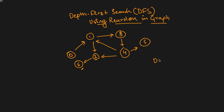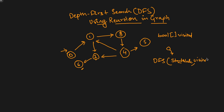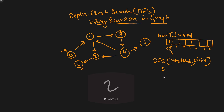We'll create a recursive function — let's call it DFS — and we'll pass the starting node. Initially we'll start from zero, so we'll pass zero. We'll keep track of visited nodes using a boolean array called 'visited'. We have seven nodes, so indices zero through six. We have visited zero, so that entry is set to true.